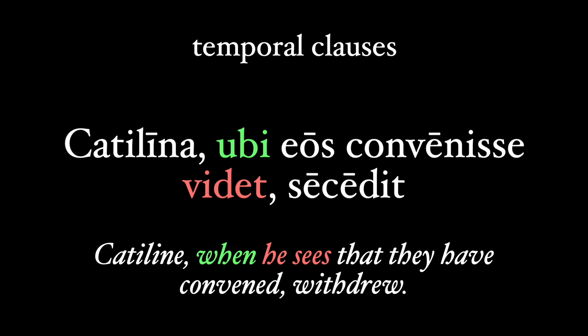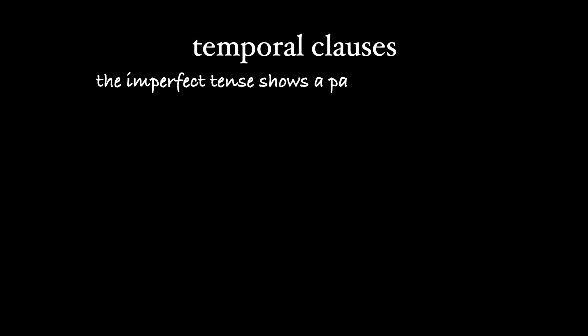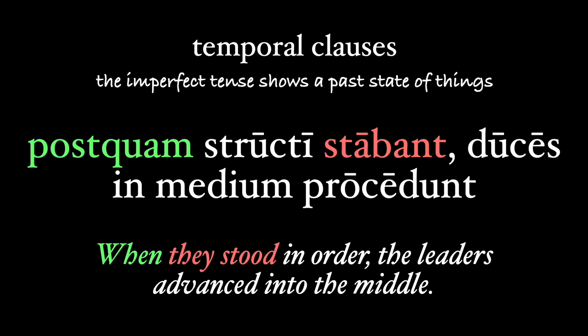Or in our example about Catiline, the verb is going to be in the present tense but with a past sense. If we revisit that example, you'll note that the main verb se cadit is in the perfect tense, reinforcing the historical present nature of videt. When the imperfect tense is used, it's to show a past state of things rather than an action. So postquam structi stabant, duces in medium proeunt — 'when they stood in order, the leaders advanced into the middle.' Our imperfect stabant shows a state of things — here the state of the soldiers.